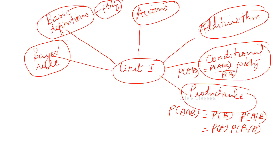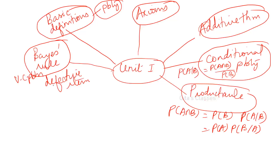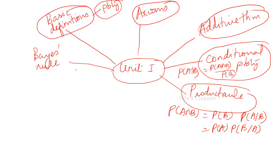One definite question for five or seven marks you can expect from Bayes' rule. Minimum one or two questions you can expect from the first unit. Conditional probability is important, product rule is important, Bayes' rule is important. These kinds of problems in Bayes' rule include the VC problem we solved, and manufacturing problems — three machines producing defective items.